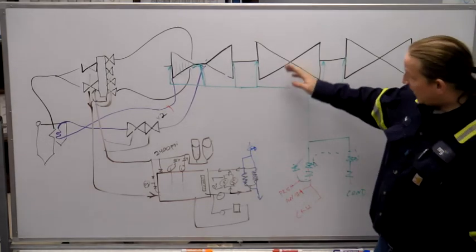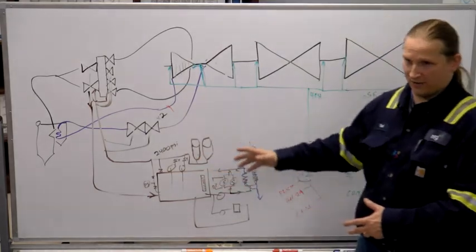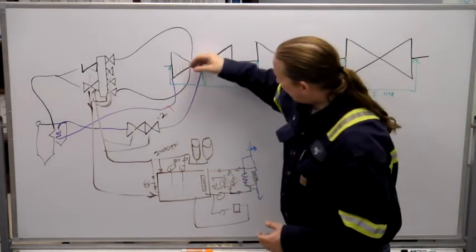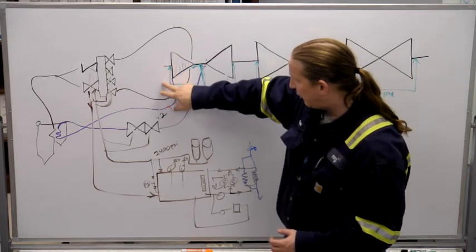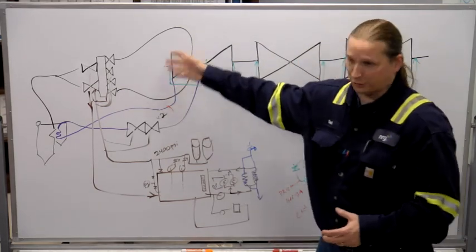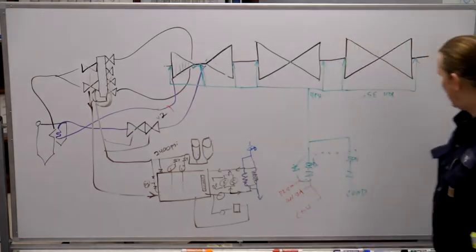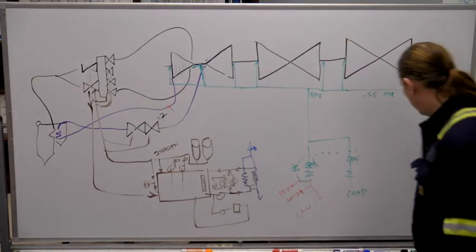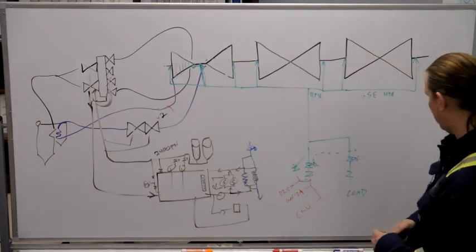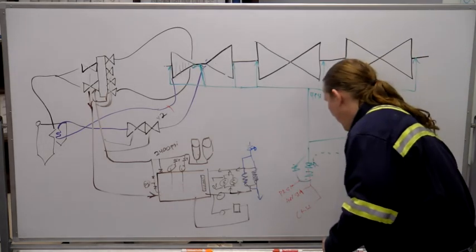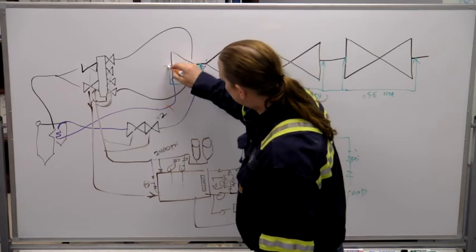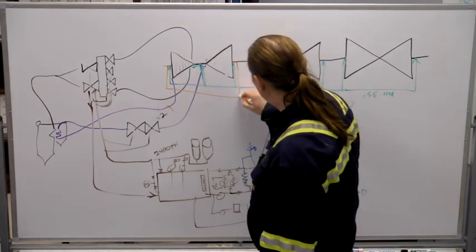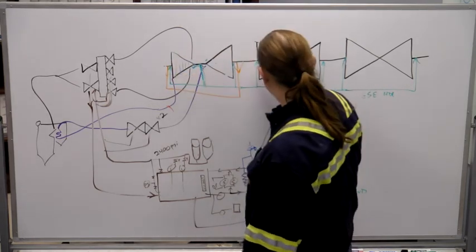The labyrinth seals do most of the work. So the labyrinth seals pull the pressure way down, and then the 4 pounds doesn't necessarily hold it back on the HP side, but the vacuum can catch the rest of it. So let's do color. So then on the outside of every one of these, you're pulling off to the gland steam exhaust condenser.